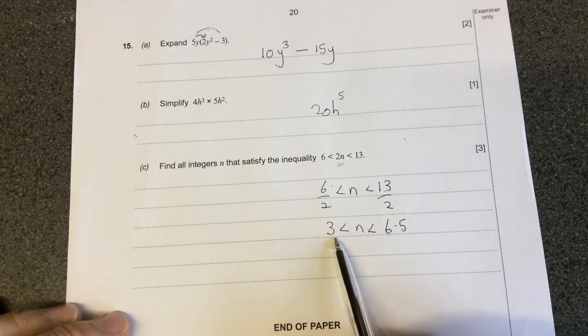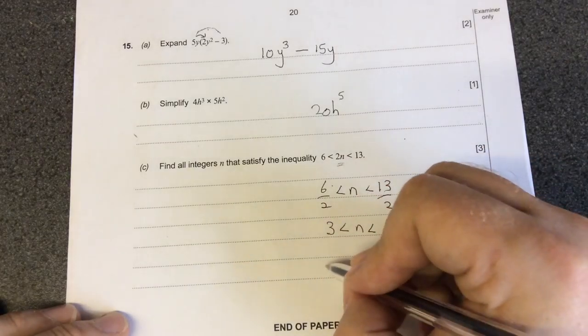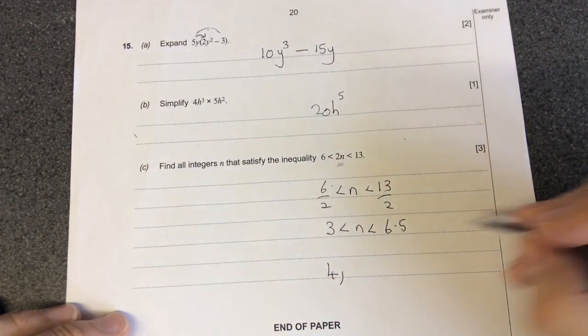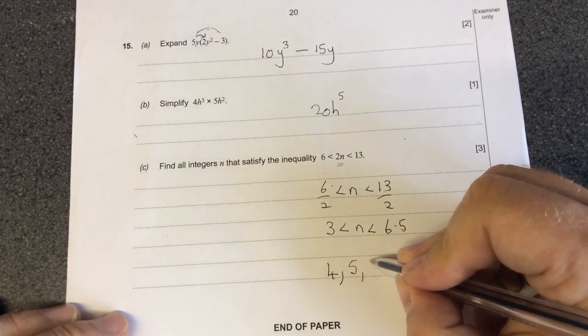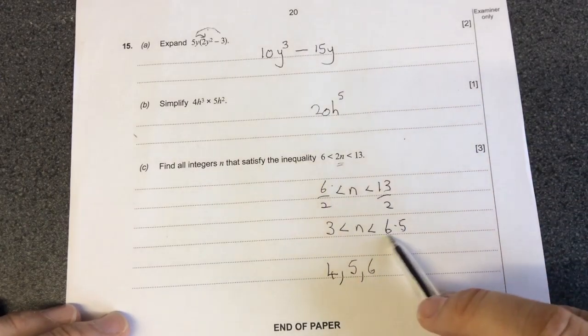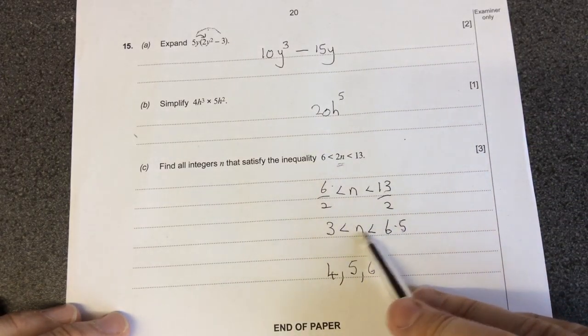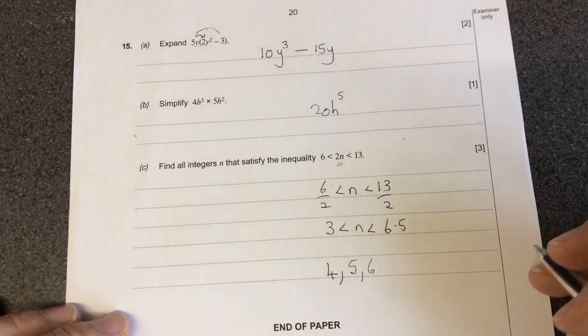It's bigger than 3 so it doesn't include 3 because it's not equal to it. So the first value of n satisfies is 4. It also satisfies 5 and it also satisfies 6. It doesn't satisfy 7 because n is less than 6.5.